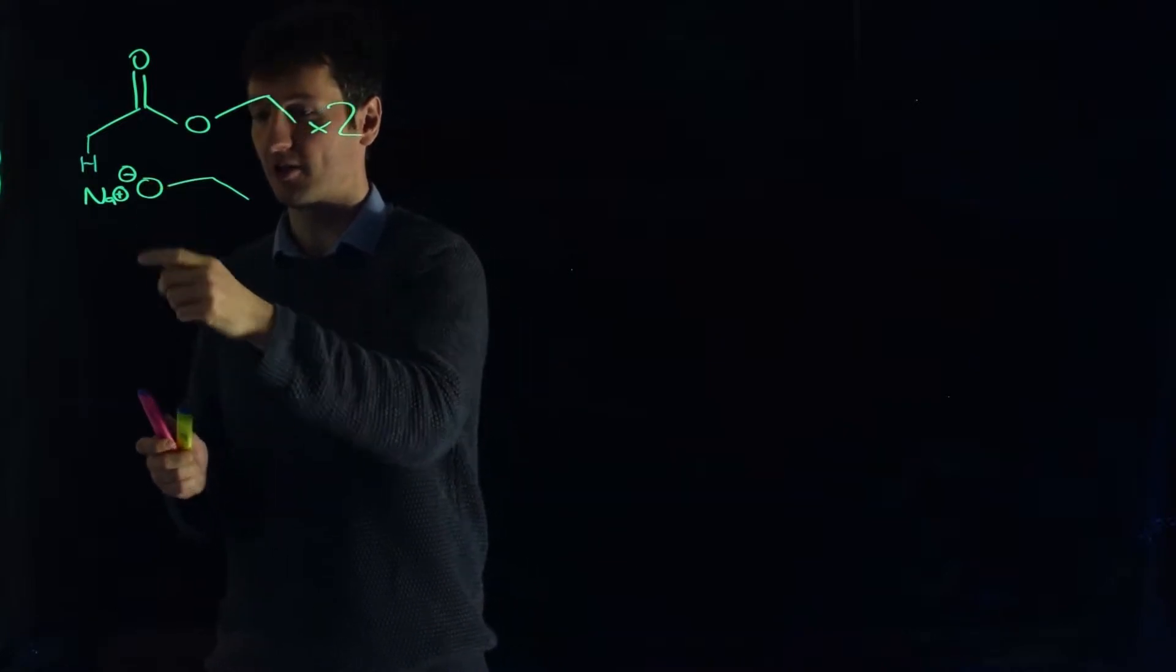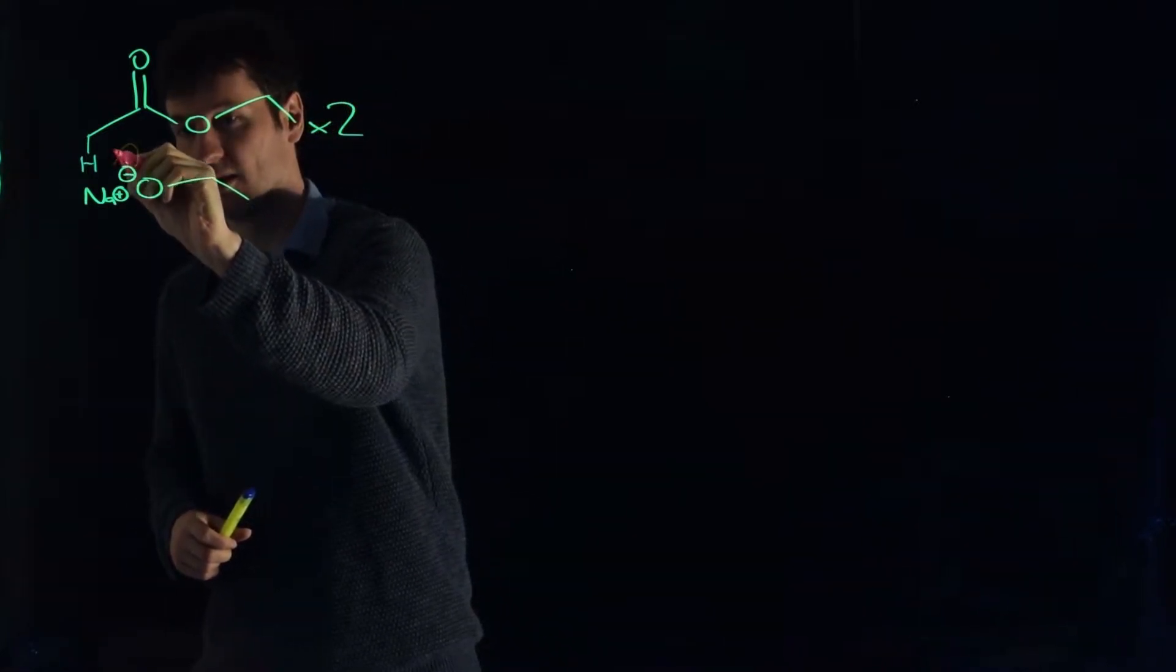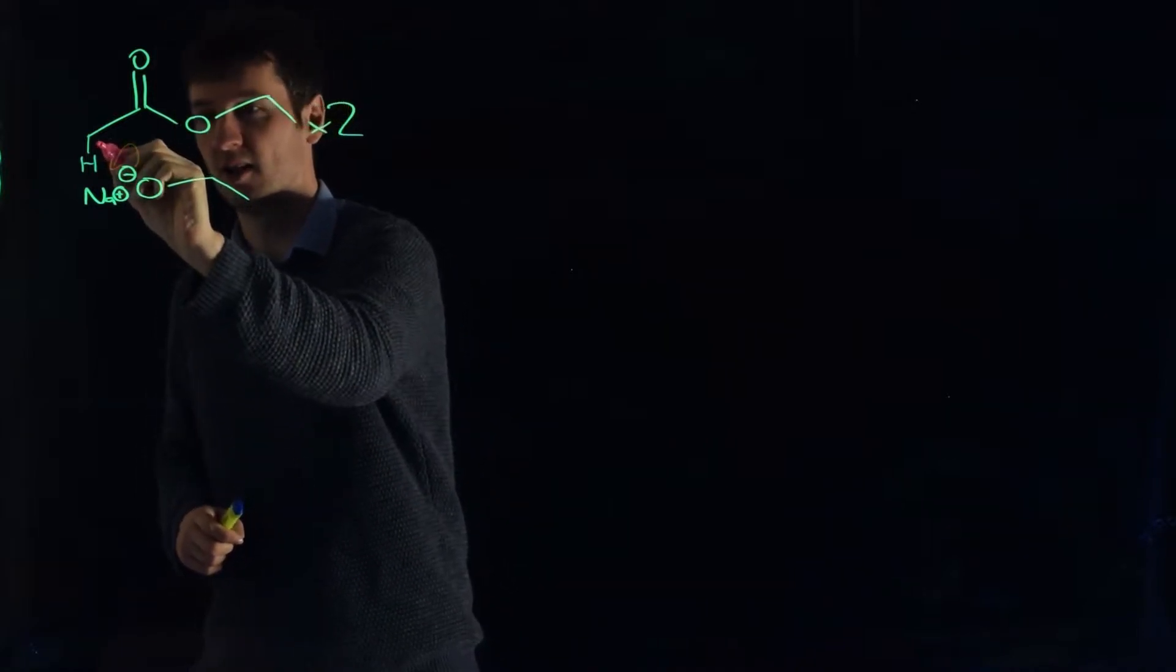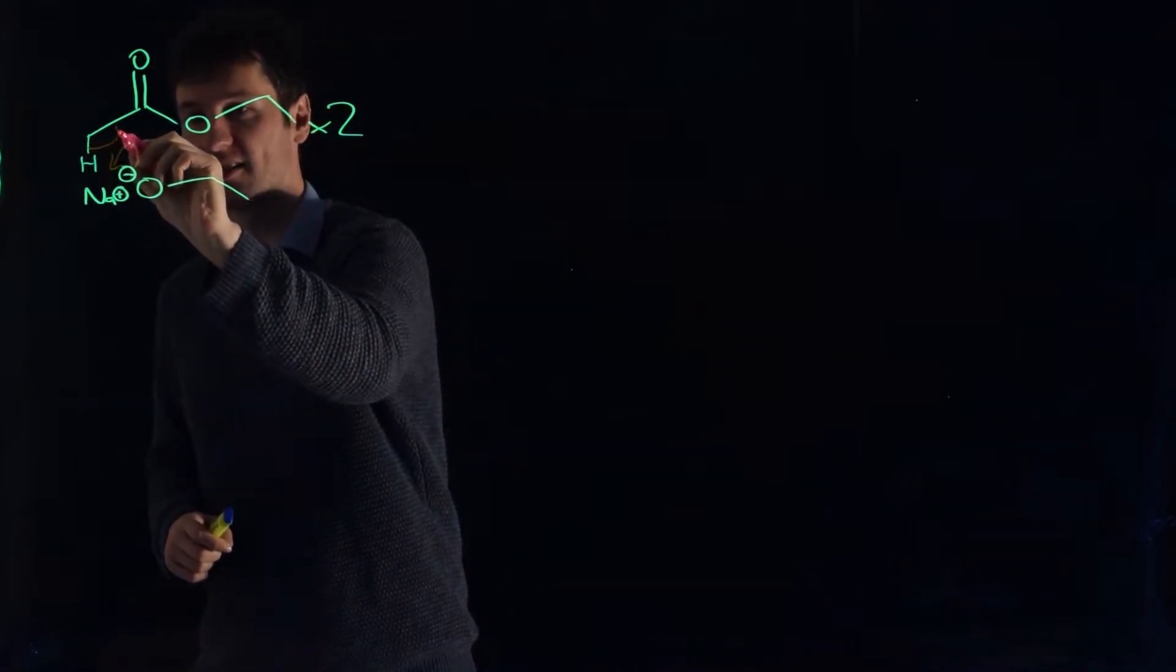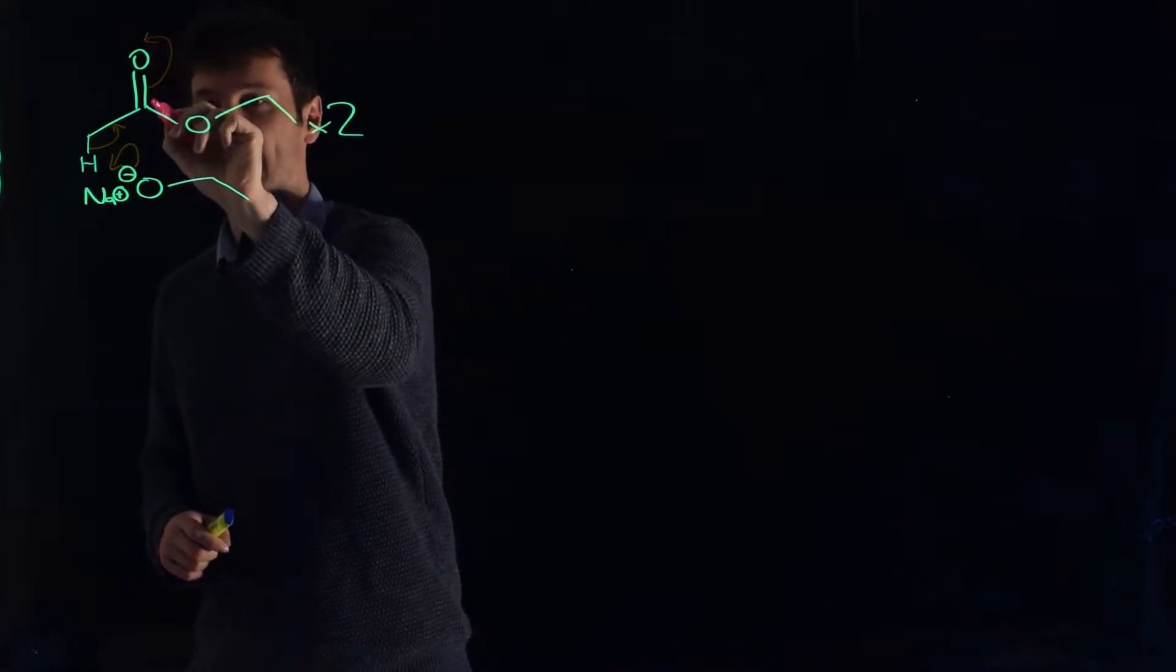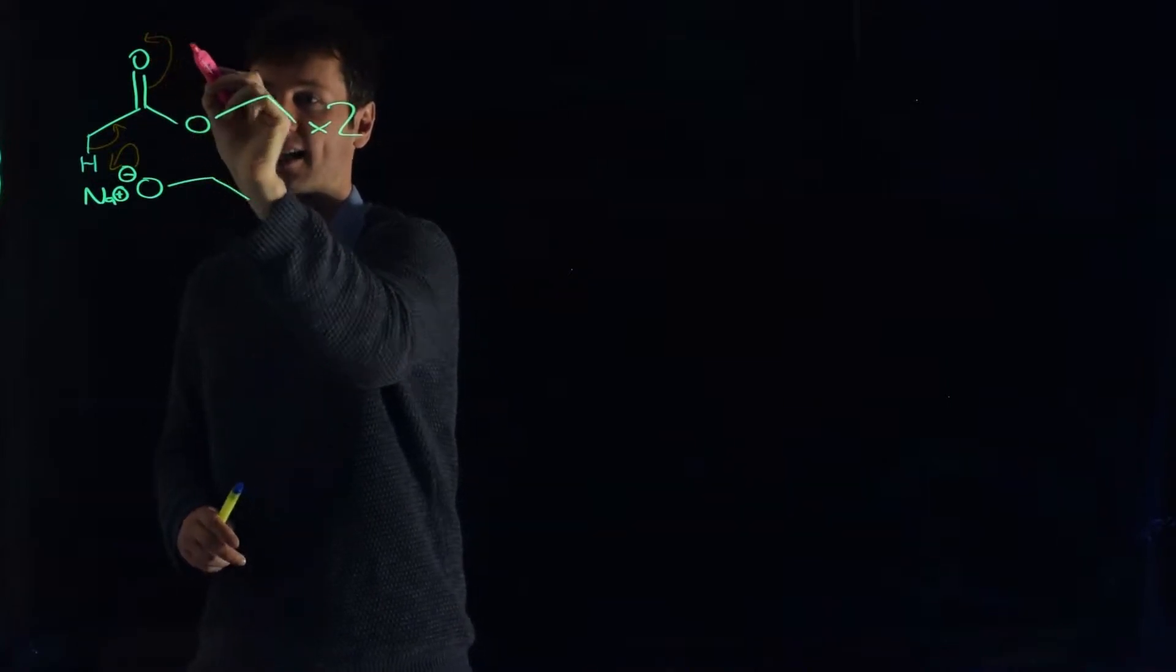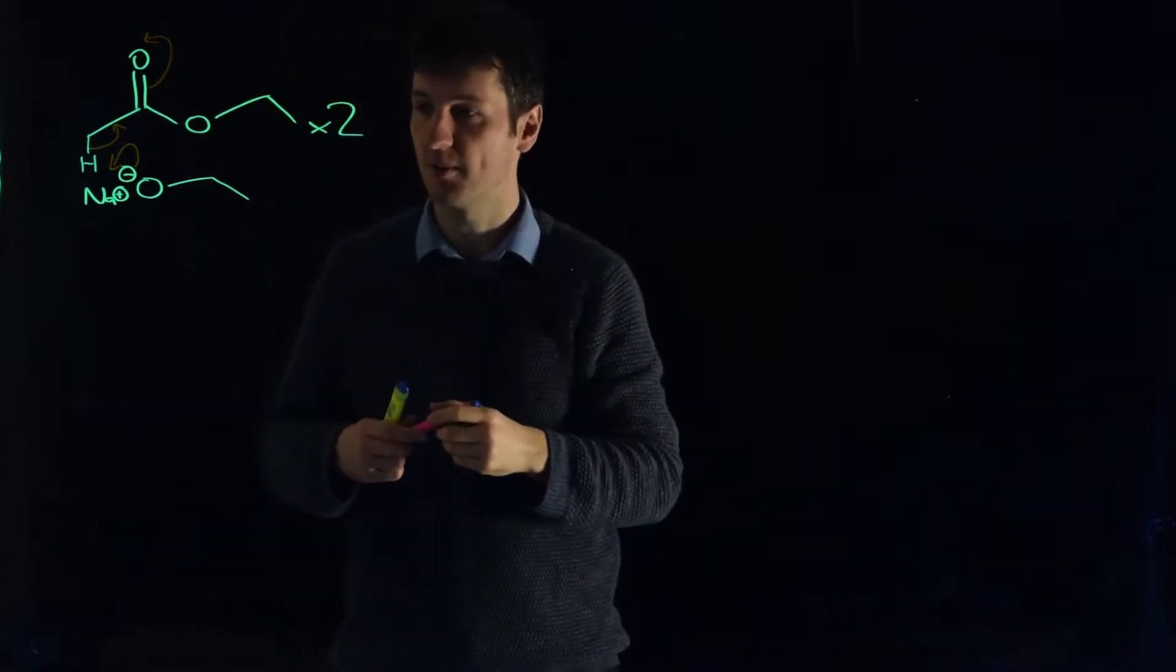So if you put in your strong base, it can deprotonate, and when it deprotonates, it forms a new oxygen-hydrogen bond. We form what's called an enolate. So we make our carbon-carbon double bond, the ene, and then we make the alcohol, or the carbon-oxygen single bond, and it's an ate because it'll have a negative charge on it. So we make our enolate.